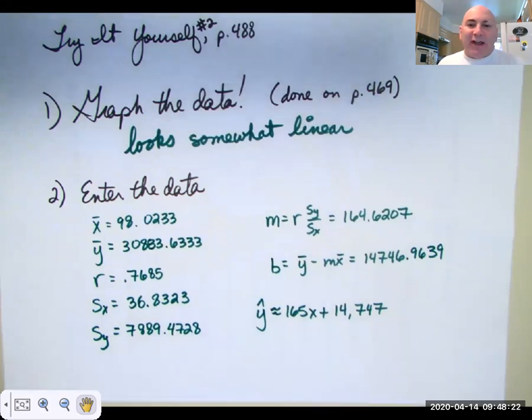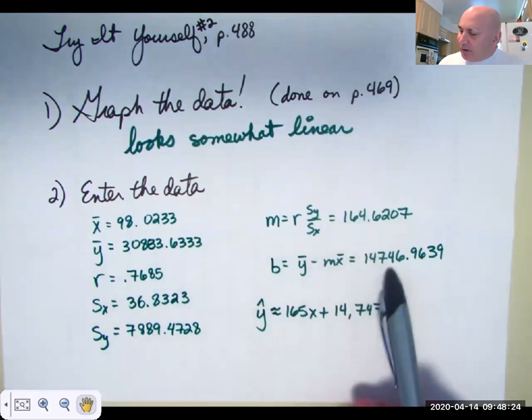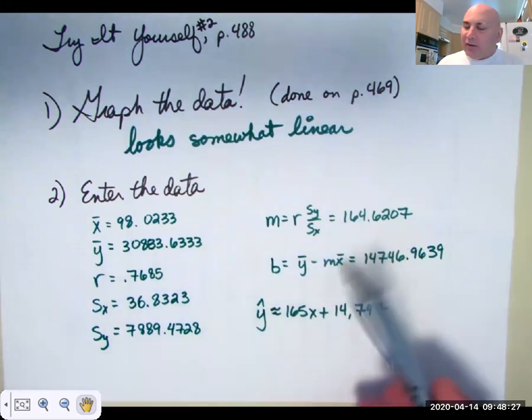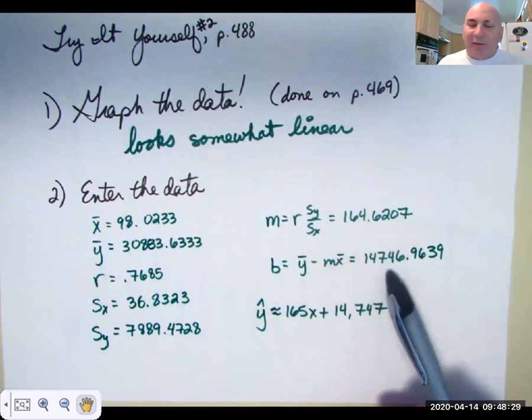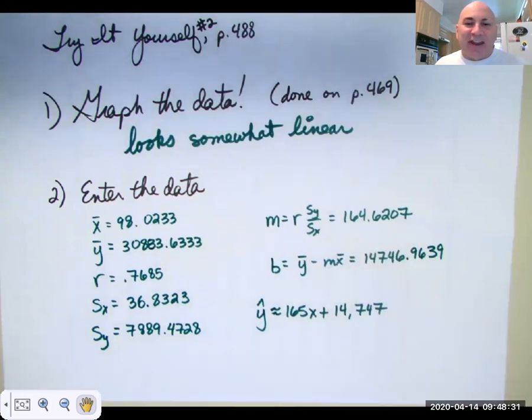So if we look at the y-intercept, if you didn't pay your team anything this says that you'd have almost 15,000 people in the stands. Clearly that doesn't make sense, but it does explain what a y-intercept is.